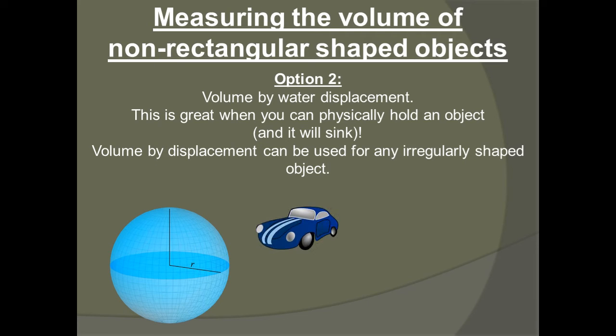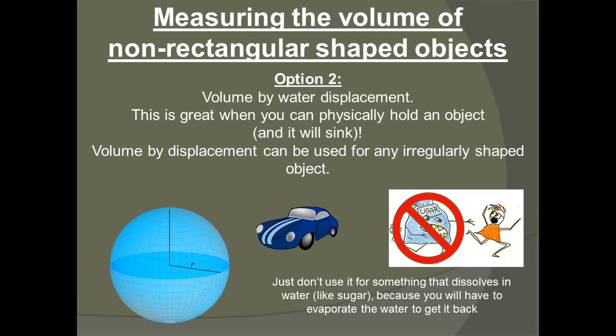Volume by displacement can be used for virtually any irregular shaped object, such as a sphere, your toy car. Just don't use it for something that dissolves in water like sugar, because in order to get your sugar back, you'll have to evaporate the water.